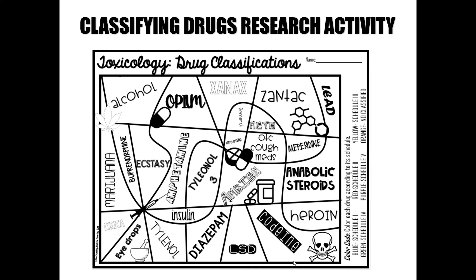Schedule V drugs have lower potential for abuse than Schedule IV and consist of limited amounts of narcotics — examples include cough medicines and over-the-counter medicines like Lyrica. On the screen you can see different drugs to classify. If you are one of my students, you will be completing this worksheet. If not, head over to the DEA's website and search the Controlled Substances Act to find how the DEA classifies drugs and toxins. I will see you in part two of the Forensic Toxicology video.